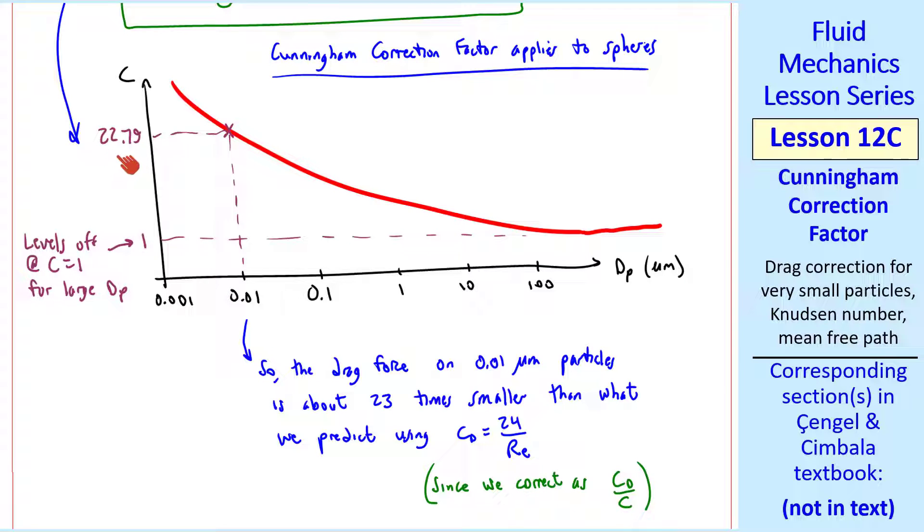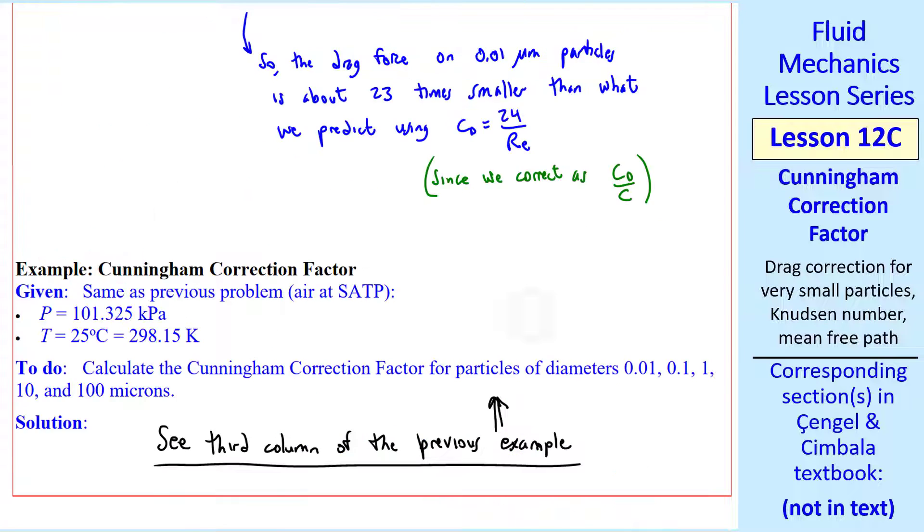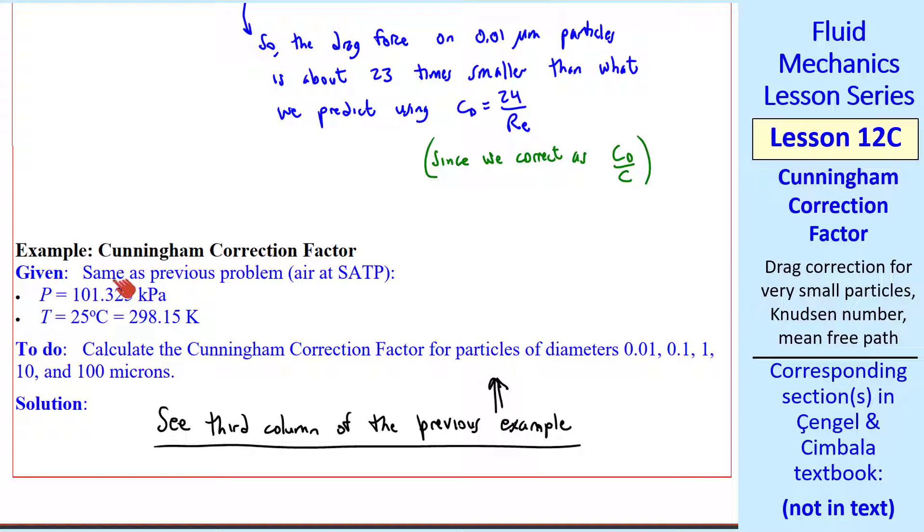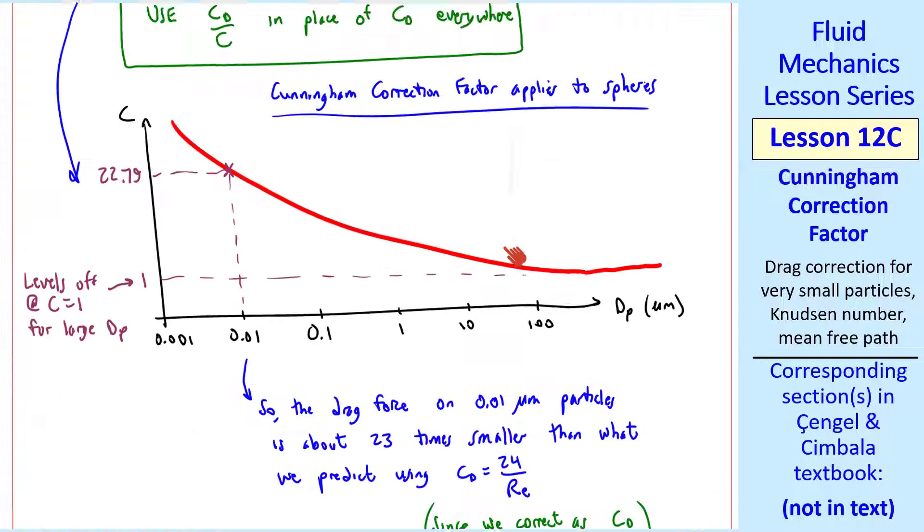Let's do another example problem. It's the same as the previous problem, here at SATP. Here we want to calculate Cunningham correction factor for these same five particles. I added a third column to the previous example results, and I'll show that here.